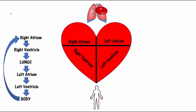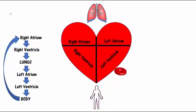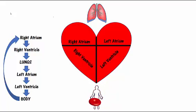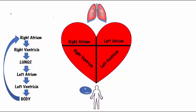This oxygenated blood is going to return to the heart at the left atrium. From there, the blood travels to the left ventricle, and then finally to the body. As the blood travels around the body, it delivers oxygen to the cells. Then it becomes deoxygenated, and at this point the deoxygenated blood will return to the heart.